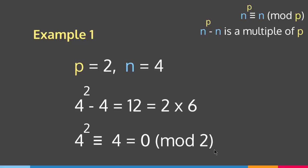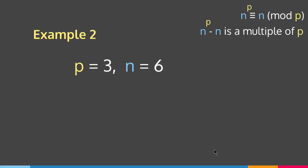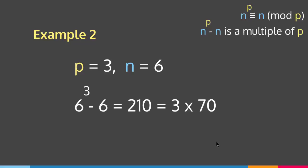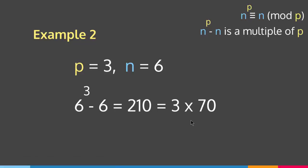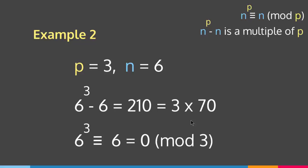Let me give you another example. Suppose p = 3 and n = 6. Then 6 to the 3 minus 6 equals 210, and 210 is a multiple of 3 because 210 = 3 × 70. Therefore n to the p minus n is a multiple of p. For the congruence form, 6 cubed is congruent to 6, which equals 0 mod 3.